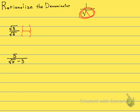You might ask yourself: what would I need to multiply this square root of 2 by to make sure there's nothing left in the radical? The answer is square root of 2. If I multiply the denominator by square root of 2, I need to also multiply the numerator — I don't want to change the value, just the way that it looks. Square root of 2 times square root of 2 is just 2. Look at that — no more radicals in the denominator.